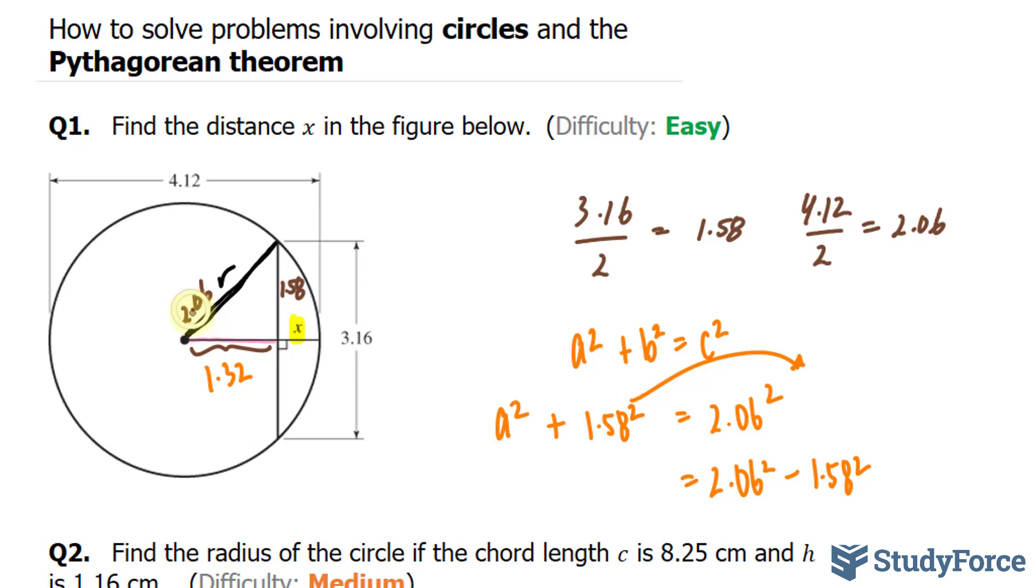If I subtract this from 2.06, the radius, I should get x. So 2.06 minus 1.32 gives me my value of x, 0.74 is the distance of what's highlighted. That's the answer to question number one.